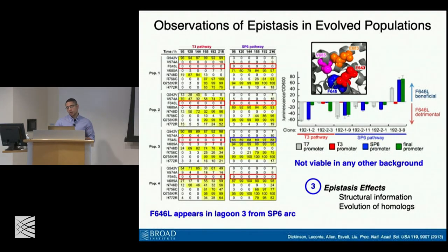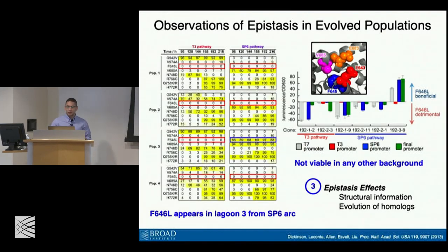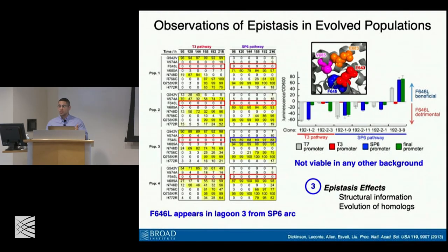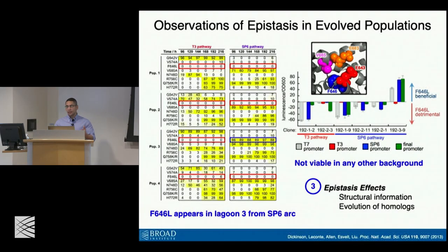As we go through these various directed evolution projects, we continuously consider many of these epistatic effects and what they mean both in the context of the biomolecule we've evolved, but also if they can be extended to additional biomolecules. This particular set of data illuminated the importance of being able to discover many of these epistatically difficult mutations.